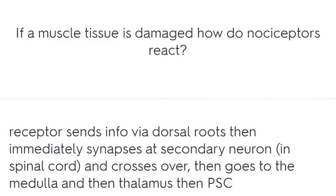If muscle tissue is damaged, how do nociceptors react? The receptor sends info via the dorsal roots, then immediately synapses at a secondary neuron and crosses over, then goes to the medulla, then the thalamus, then the primary somatosensory cortex.